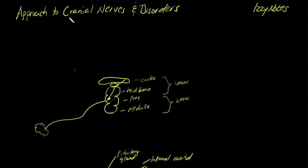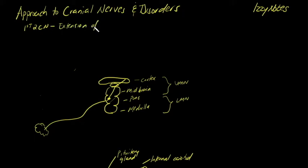What you need to remember is that cranial nerves — it's important to know where they originate. The first two cranial nerves are not really cranial nerves; they don't originate from the brainstem. They are simply an extension of the cortex. Cranial nerve one, which you smell with, and cranial nerve two, the optic nerve, are both extensions of the cortex. That's useful to know for localization.